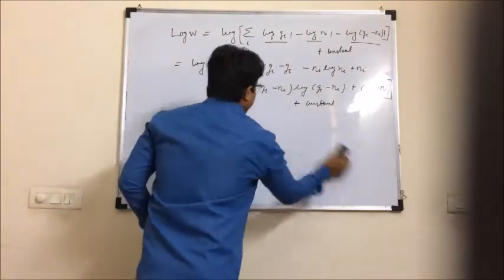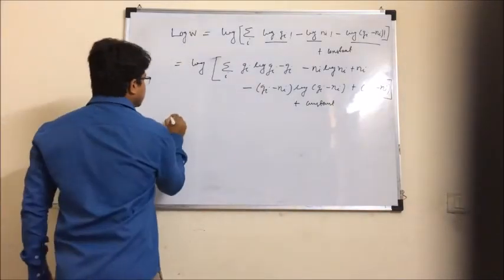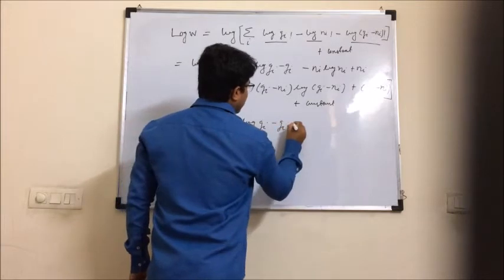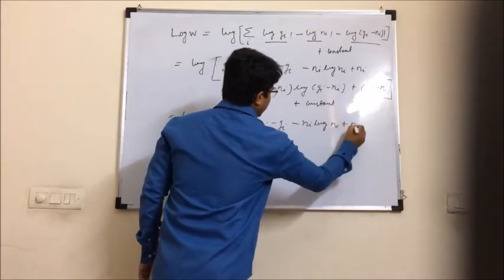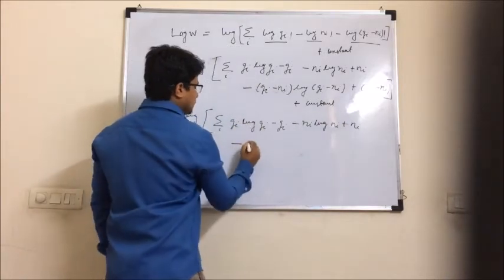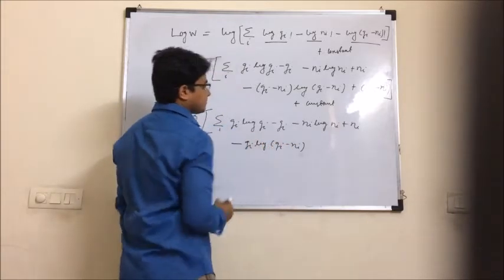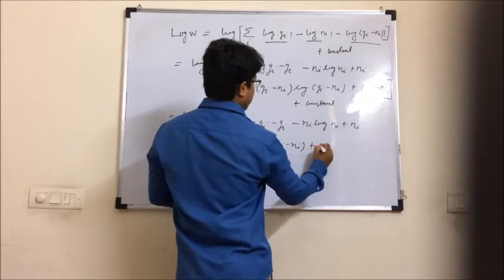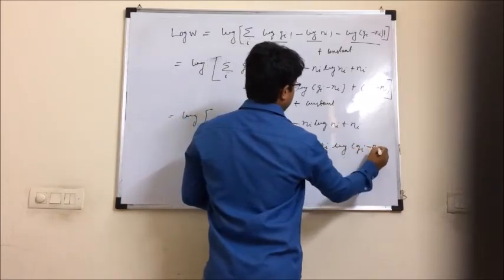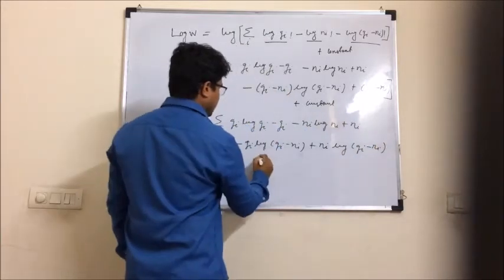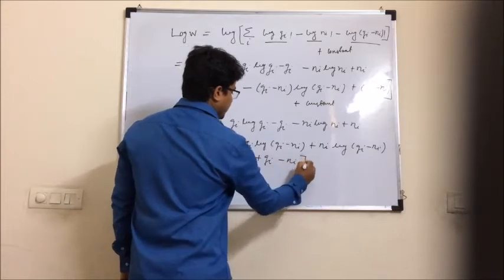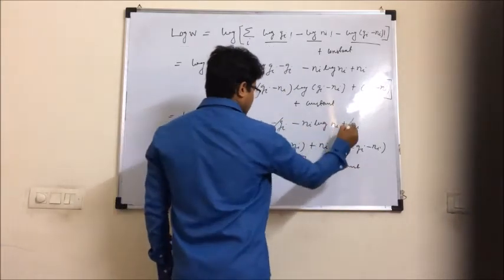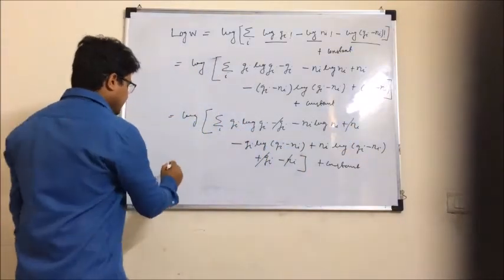Expanding and simplifying further, log W equals the sum over i of: Gi·log(Gi) minus Gi, minus Ni·log(Ni) plus Ni, minus (Gi minus Ni)·log(Gi minus Ni) plus (Gi minus Ni), plus the constant. Looking at this expression, the terms minus Gi, plus Gi, plus Ni, and minus Ni all cancel out.